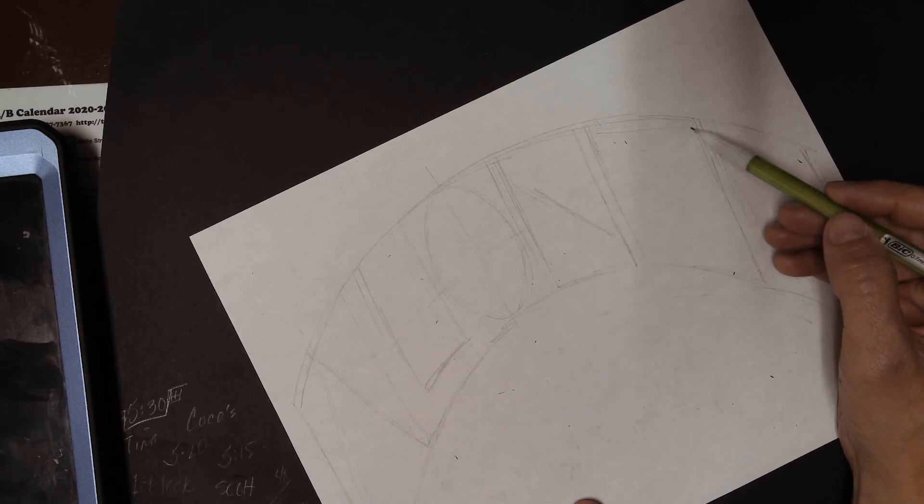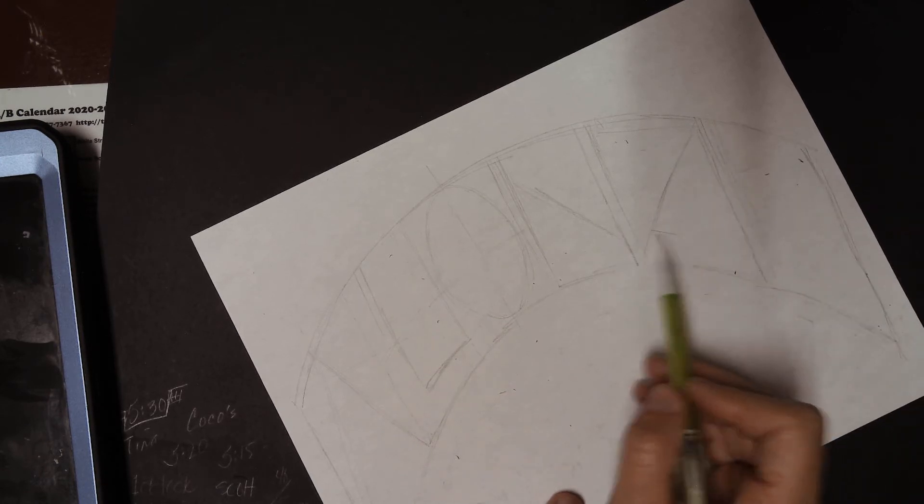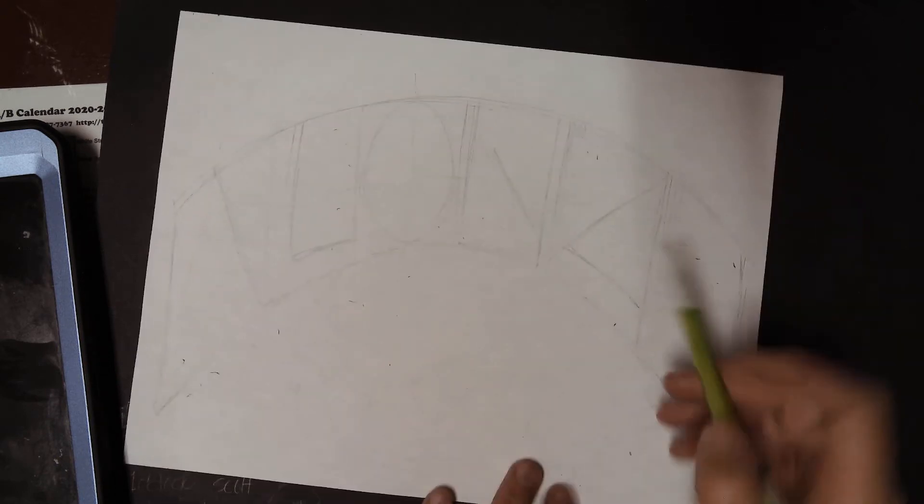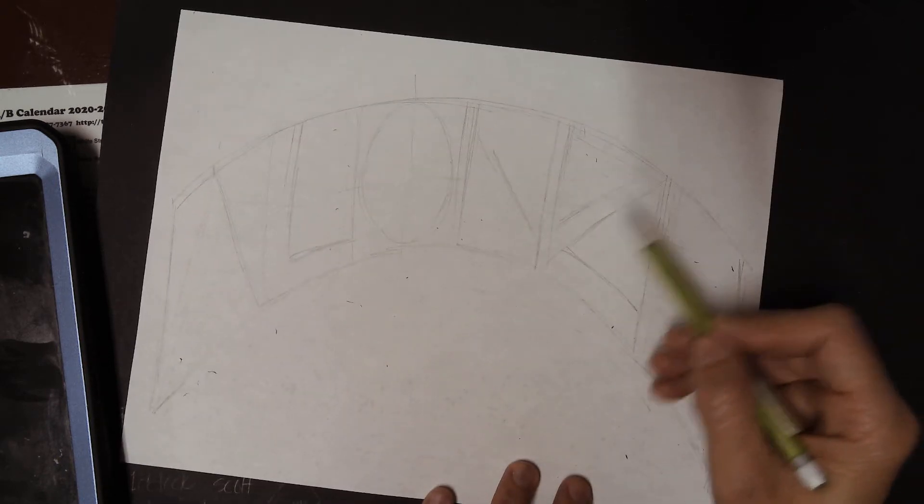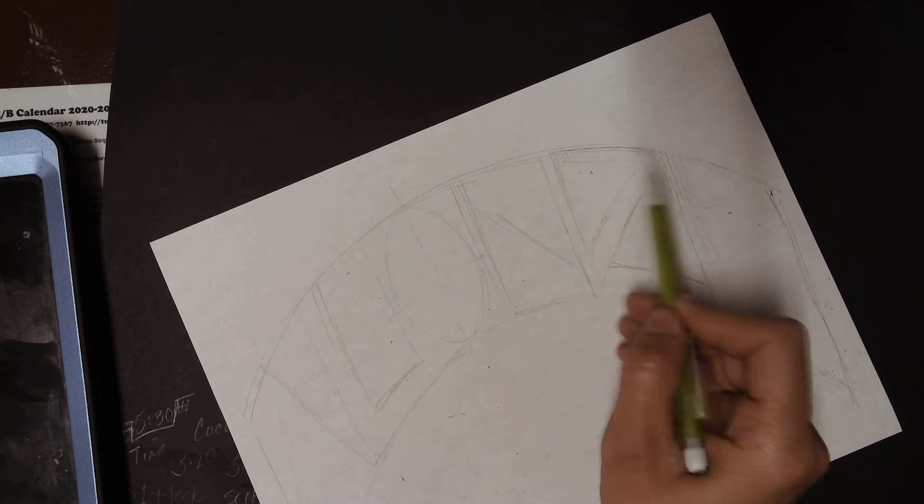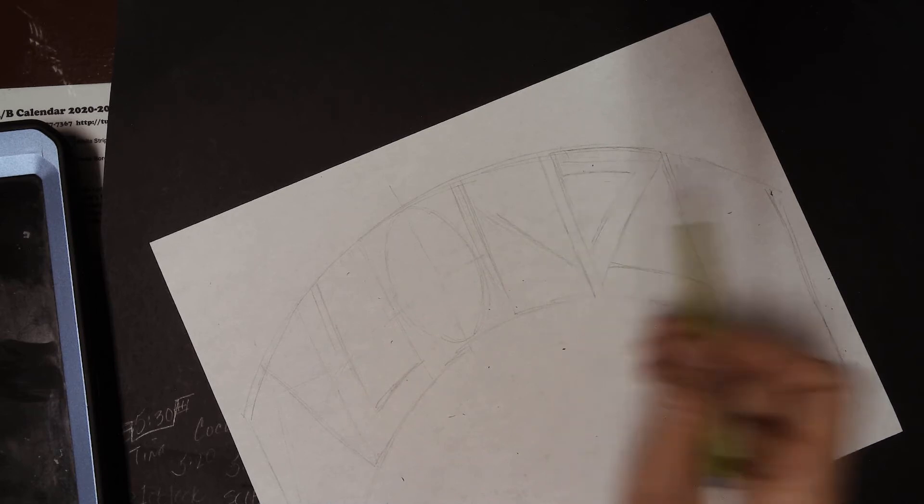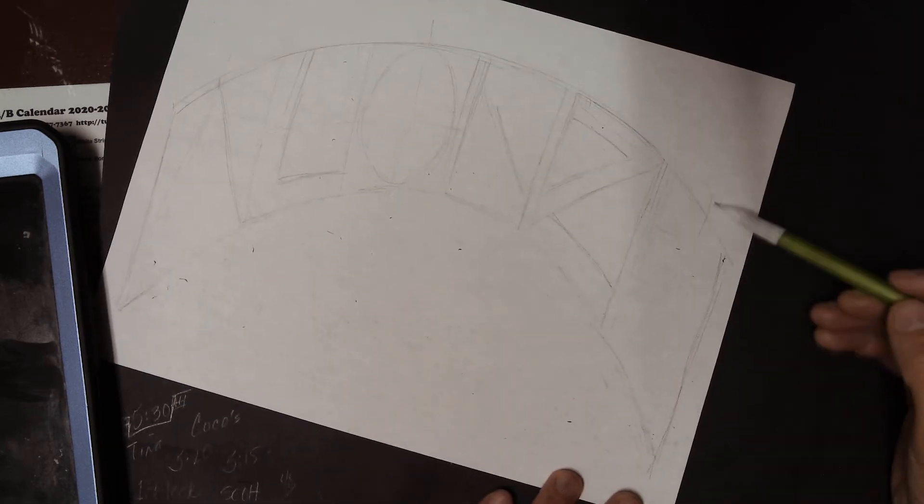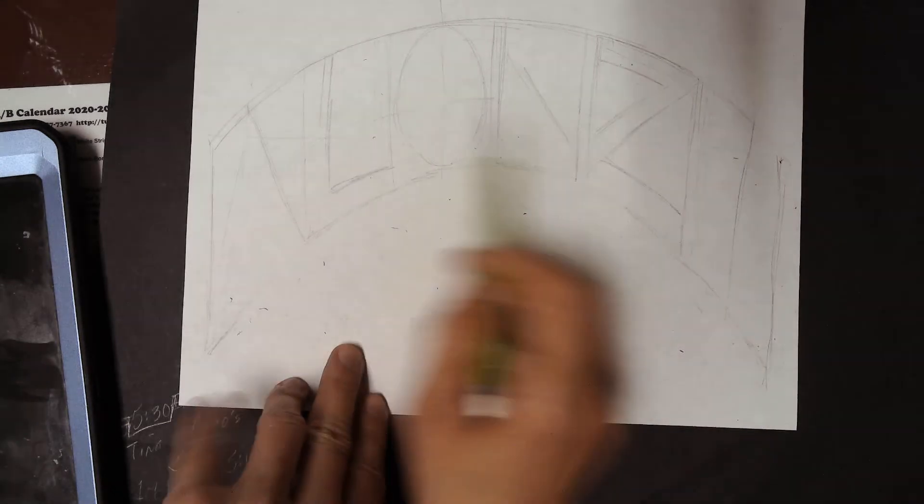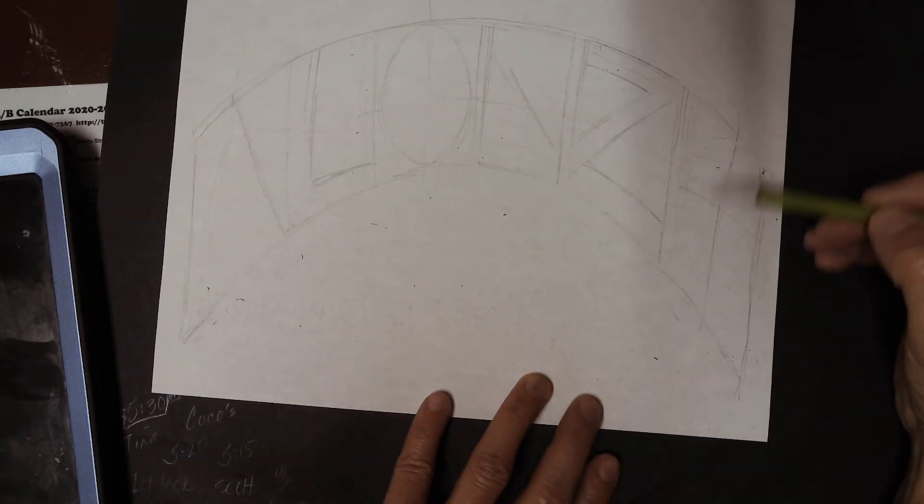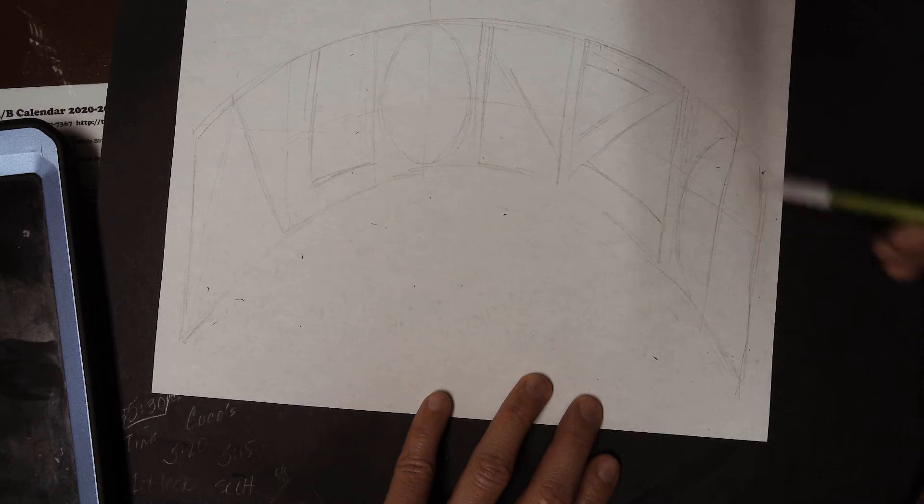So we'll just do kind of a regular Z. Keep it simple. And then we just have an O. So we may as well keep on the same plan, carry our little crosshair over, and do the O. All right.